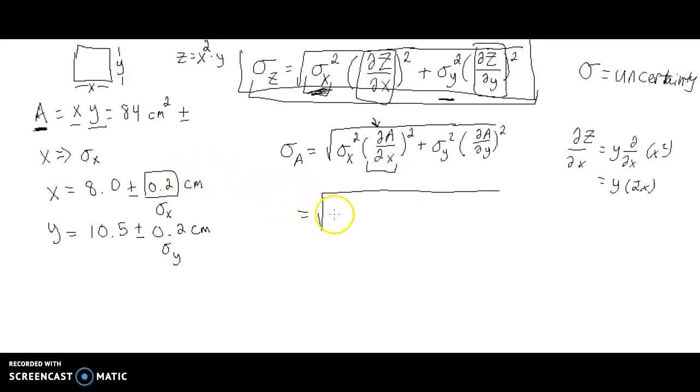But anyway, alright? So, to completely fill in this equation, what I want to do is I'm going to plug in my value for sigma x, which is 0.2, or 0.2 rather, 0.2. And let's squeeze the units in there. We do want to keep our units straight. And the result of da dx was my y value, so this is going to be 10.5.